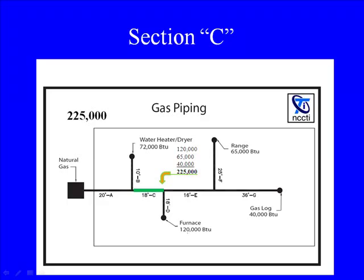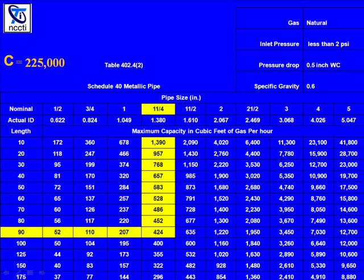Now we'll size section C. Section C has got to be able to carry the furnace, the gas log, and the range. You can subtract 297,000 from 72,000, or you can simply add up the range, gas log, and furnace, which equals 225,000. So section C has to be able to carry 225,000 BTU. Using the same process, starting at the 90 foot row, we go over until we get something greater than 225,000. Here again, it's inch and a quarter pipe.